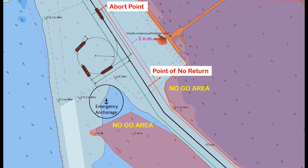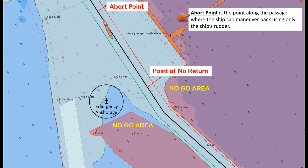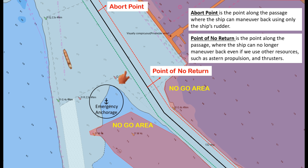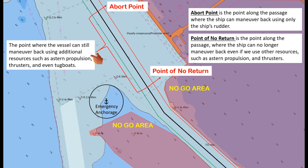To summarize: the abort point is the point along the passage where the ship can maneuver back using only the ship's rudder, while the point of no return is the point along the passage where the ship can no longer maneuver back even using other resources such as astern propulsion and thrusters. The point along the passage between the abort point and the point of no return is where the vessel can still maneuver back by using additional resources such as astern propulsion, thrusters, and even tugs.